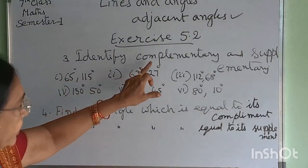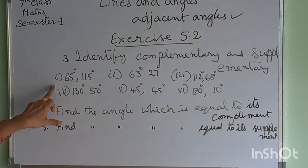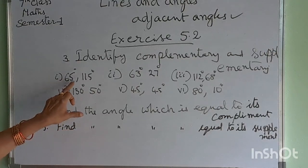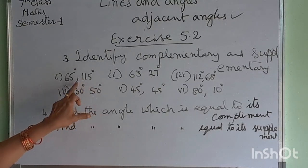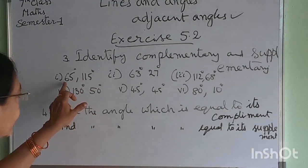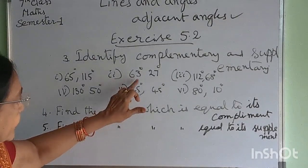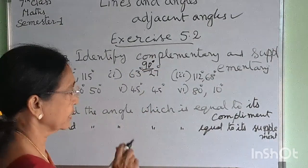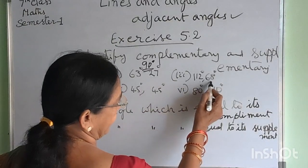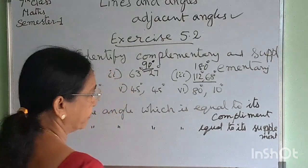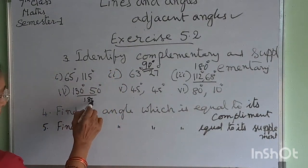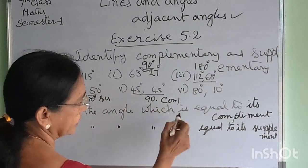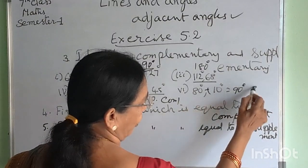Next, the third problem: identify complementary and supplementary angles in the following. 65 degrees and 115 degrees — sum is 180 degrees, so these two are supplementary angles. 63 and 27 degrees — sum is 90 degrees, therefore complementary angles. 112 and 68 — sum is 180 degrees, therefore supplementary angles. 130 and 50 — sum is 180 degrees, therefore supplementary angles. 45 plus 45 equals 90 degrees, therefore complementary angles. 80 plus 10 equals 90 degrees, so complementary angles.